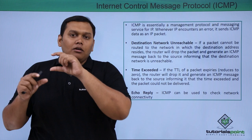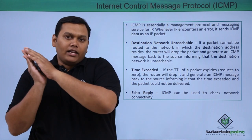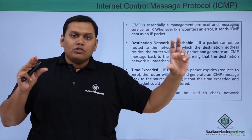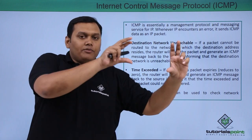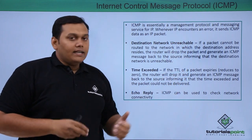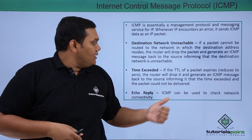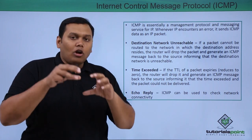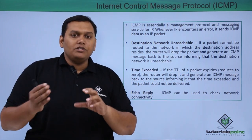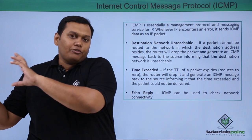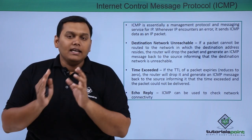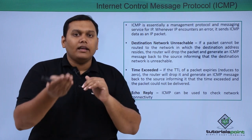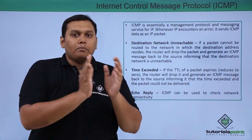The other ICMP example is 'Time Exceeded.' There is a buffer time when you send data in packet form, and when the packet is not delivered within this buffer time, the TTL (Time to Live) of the packet expires. The router will then drop the packet and generate an ICMP message back to the source to inform it that the packet was not sent to the destination, and it will ask to retry sending the packet again.